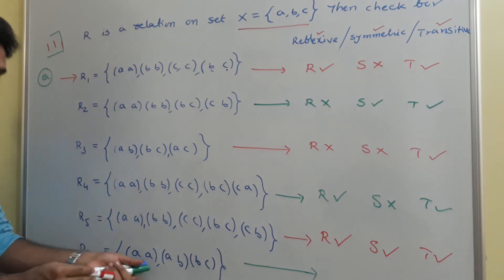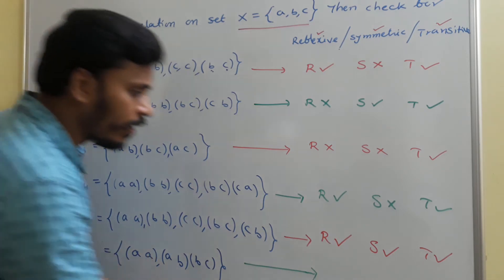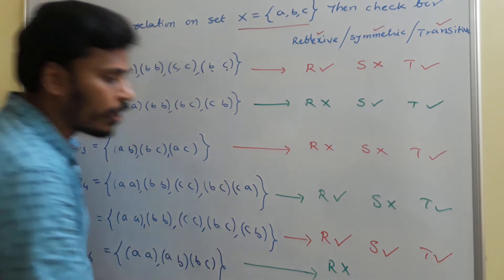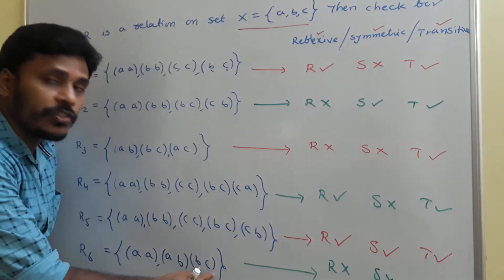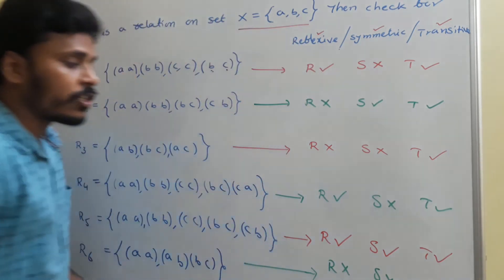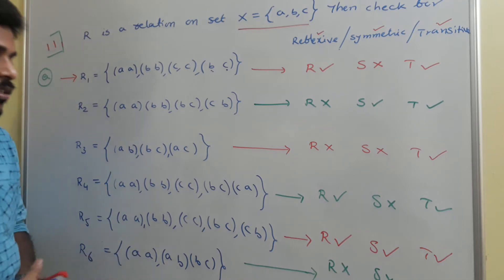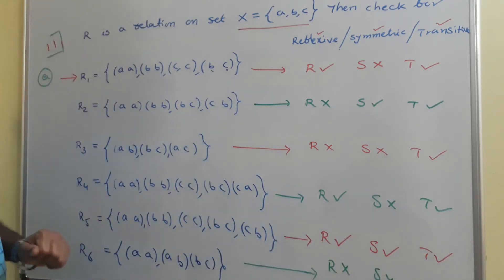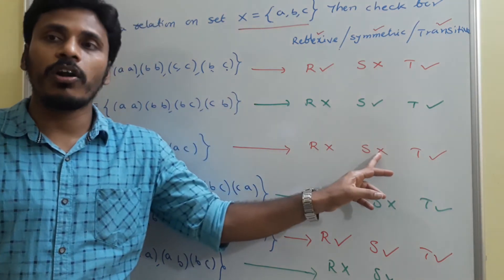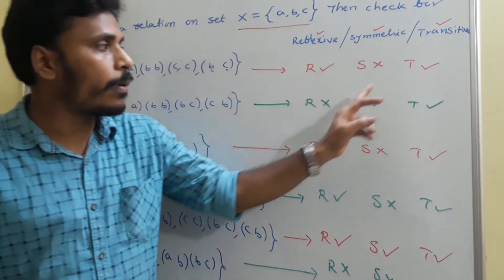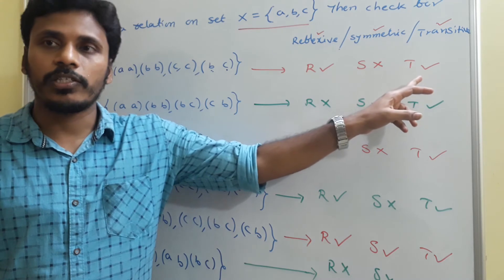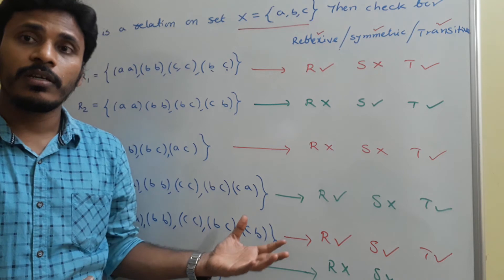For the last relation (r6): (a,a) is there — a is related to a — but (b,b) and (c,c) are not there, so it is not reflexive. (a,b) is there but (b,a) is not, so it is not symmetric. For transitive: (a,b) and (b,c) are present with b common, so we need (a,c); but (a,c) is not in r6, so it is not transitive. Summary: r6 is not reflexive, not symmetric, not transitive. r5 is reflexive, symmetric, and transitive. r4 is reflexive but not symmetric. r3 is transitive only. r2 is symmetric and transitive but not reflexive. r1 is reflexive and transitive but not symmetric.